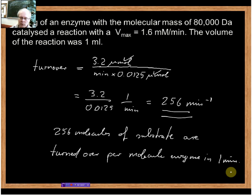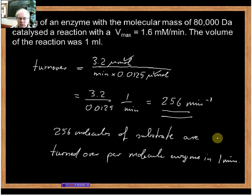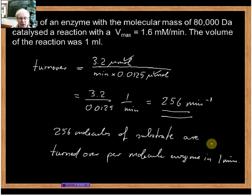Now to be perfectly honest, a turnover number of 256 per minute is not terribly impressive — a lot of enzymes have a far higher turnover number. It's around 4 to 4.5 molecules per second. So I hope you found this video useful. Thank you for watching.